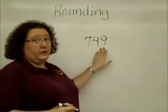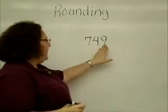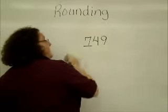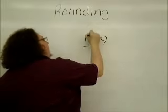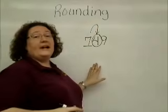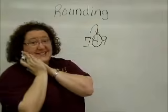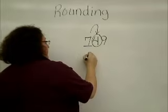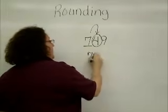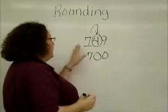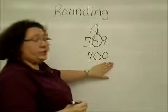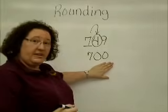Let's try another one. Find my number, count the places: ones, tens, hundreds. To the nearest hundred, I go right next door. The four tells me that I need to rest. The seven stays the same, and all the other digits behind become zeros. So seven hundred forty-nine will round to seven hundred.